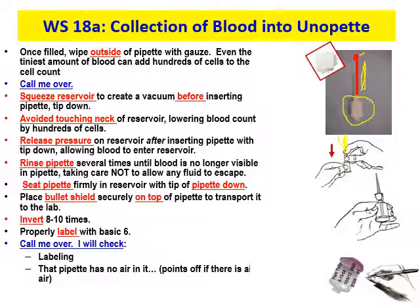Rinse the pipette several times until the blood is no longer visible, taking care not to allow any fluid to escape — be very gentle so you don't shoot the diluent out the top. Seat the pipette firmly into the reservoir with the tip down, and place the bullet shield securely on top to transport it to the lab. Invert it eight to ten times once all the blood is down in the diluent. Then properly label it with the basic six, or peel the label from your requisition and apply it. Remember: no air in that capillary tube.